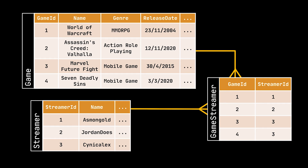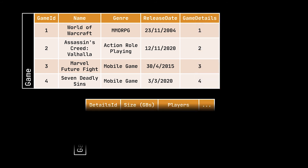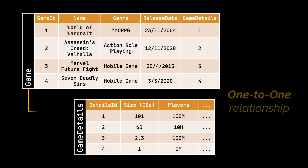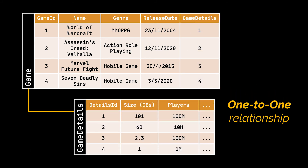Finally, and officially, there is a third kind: the one-to-one relationship. And if you think about it, it is kind of pointless, because if a row inside a table is pointing to one and only one row inside another table and vice versa, then we might as well combine these two tables into one.